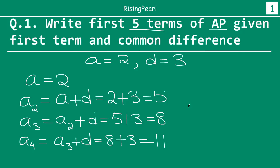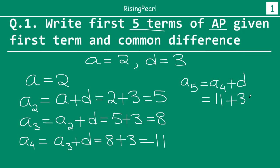And finally, the fifth term, because we want to find out the first five terms. So we take a look at the fourth term and we add the common difference to it. And this will be: fourth term is 11, plus 3, and we get 14.